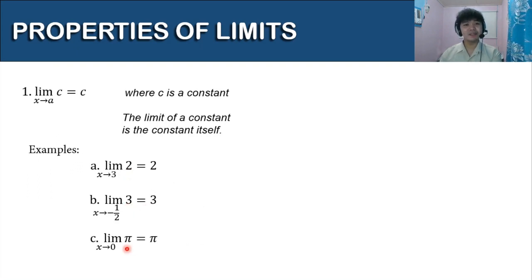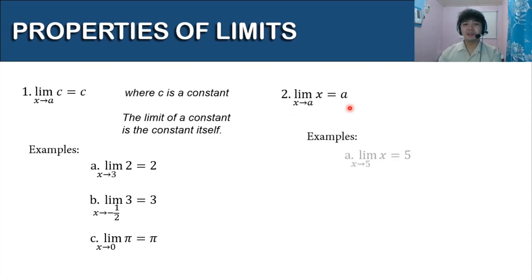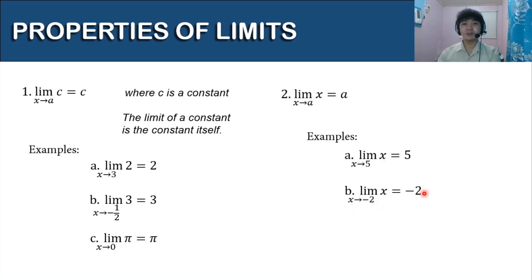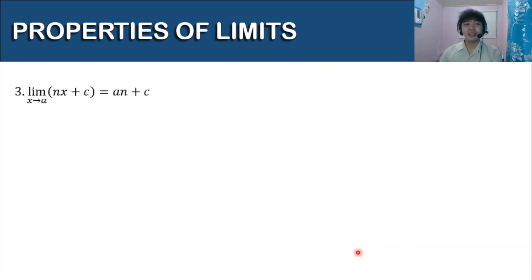Let's have the second property: the limit of x as x approaches a is equal to a. For examples: the limit of x as x approaches 5 is equal to 5, the limit of x as x approaches negative 2 is negative 2, and the limit of x as x approaches 2/3 is 2/3.